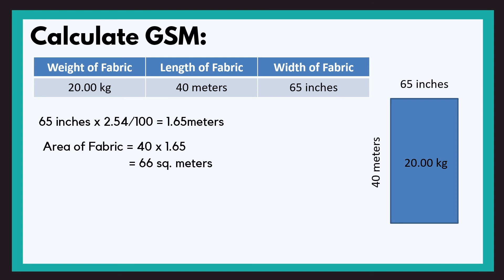Easy ho raha hai, understanding me. 66 square meters of fabric weighs 20 kgs. And 20 kgs we convert into grams, so it becomes 20,000 grams. So 66 square meters of fabric weighs 20,000 grams. Simple cross multiplication: if one square meter, how much will it be? That will be 20,000 grams divided by 66, which will come to 303 grams.